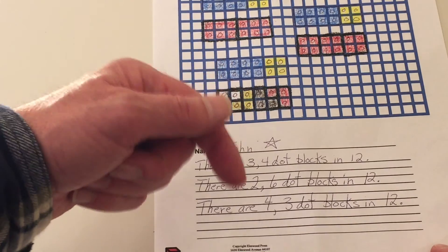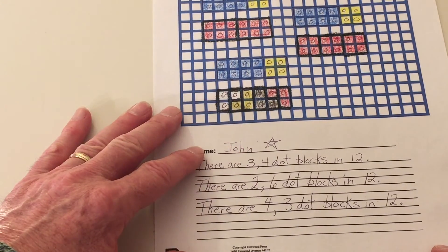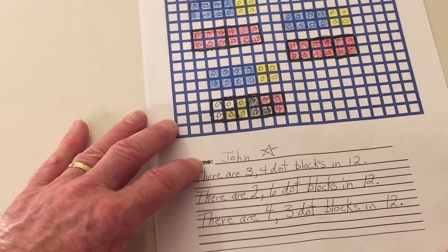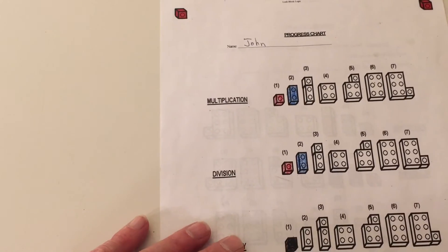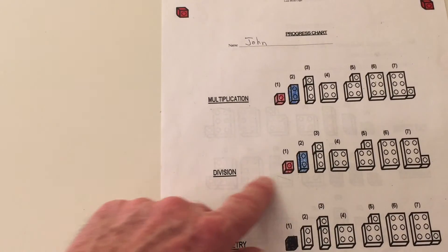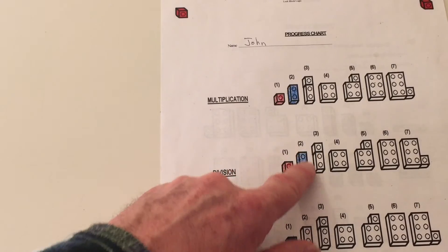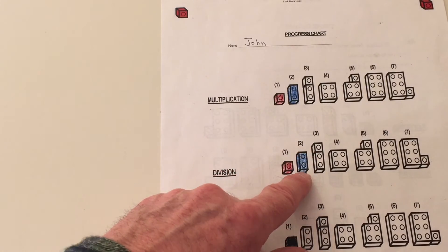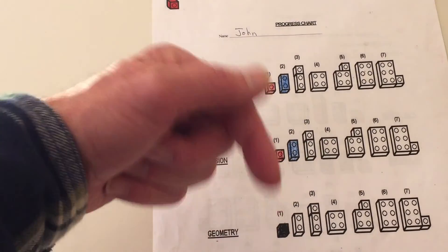Remember, you can download this graph paper down below. And now let's look at our progress chart. We're on division. We did the second one, so I colored this one in so we can keep track of our work. You can download this below.